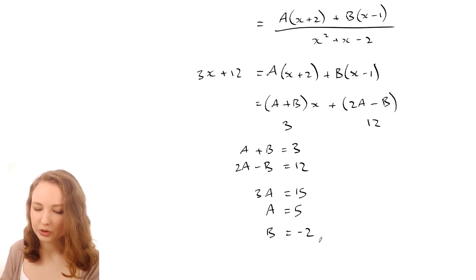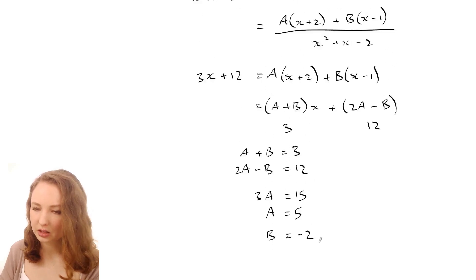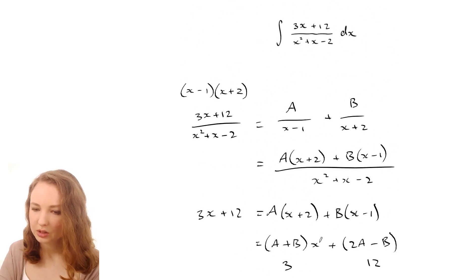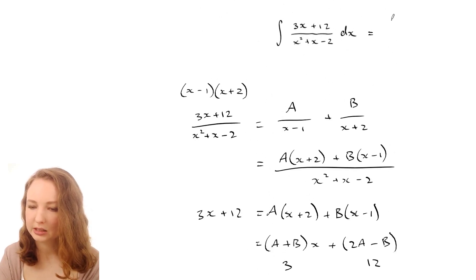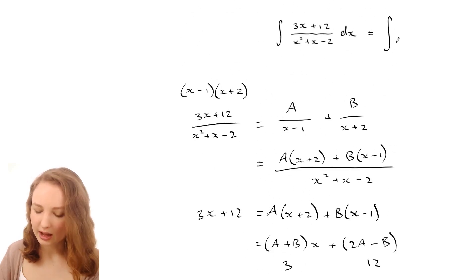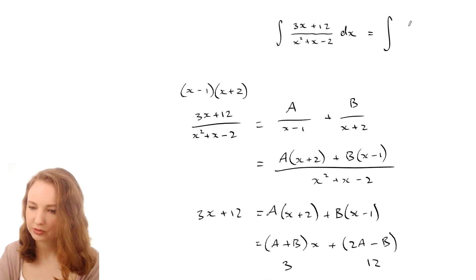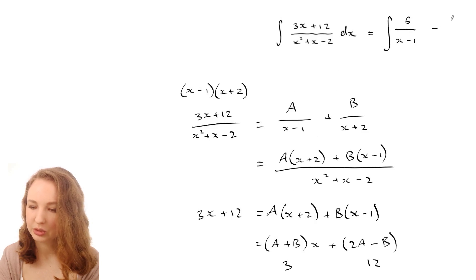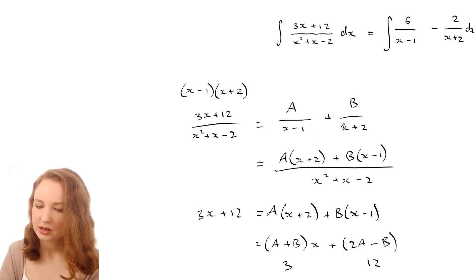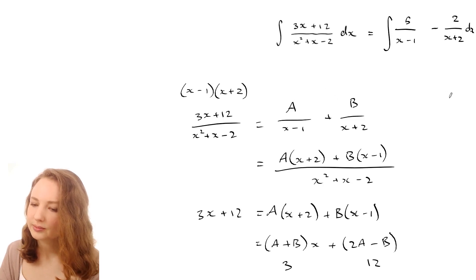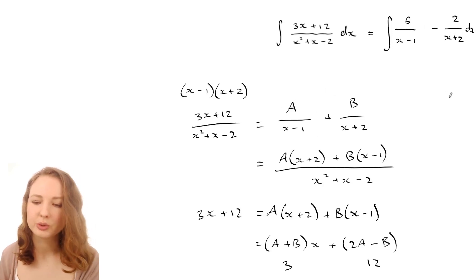So that tells you that you can rewrite the original expression as 5 over (x−1) plus negative 2 over (x+2) - just plugging those values of A=5 and B=−2 into the partial fraction form. That's one way to do it.